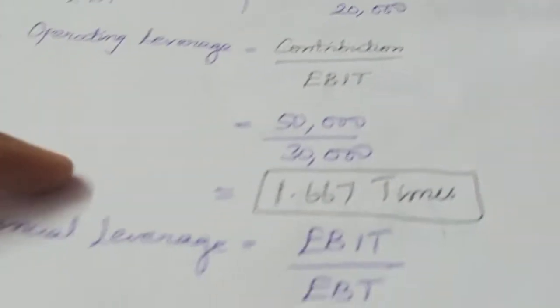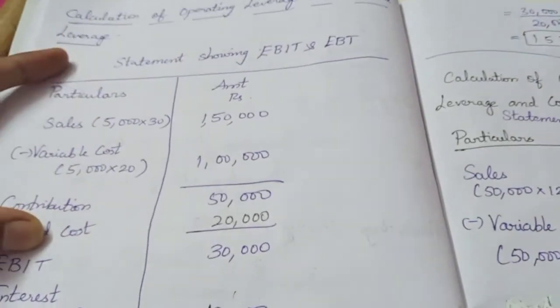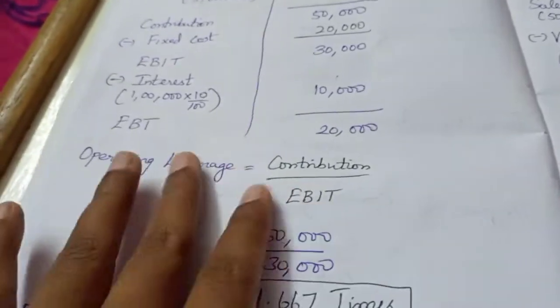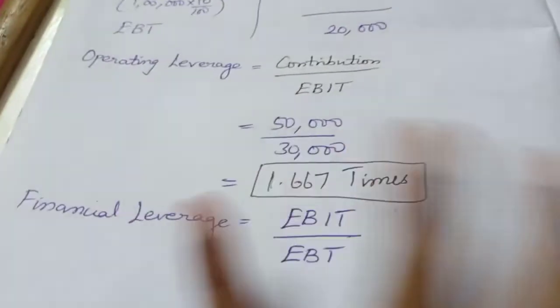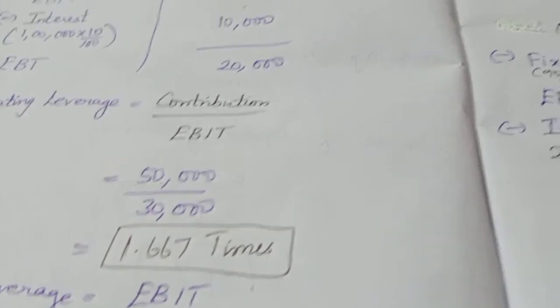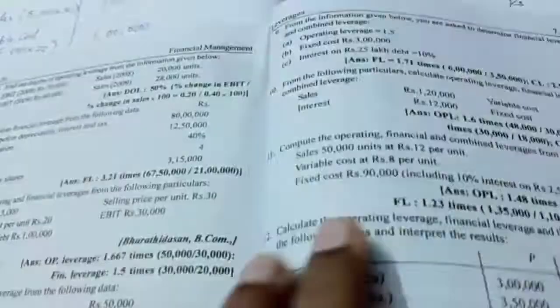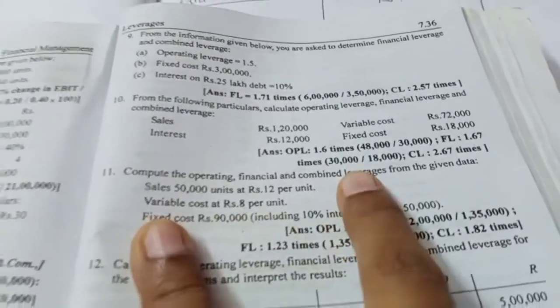This is how we calculate operating leverage and financial leverage. First we prepare the statement, determine all values like EBIT and EBT, and then substitute the formula. Now we will calculate the next problem — computing operating leverage, financial leverage, and combined leverage from given data.